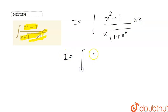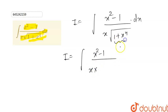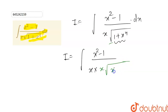So our I becomes equal to (x² - 1) divided by x into — now let's take x² common from these two terms. When we take x² common, then because of the under root, x² comes out as x. Now inside the under root we are left with x² plus 1/x², dx.